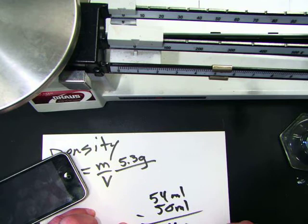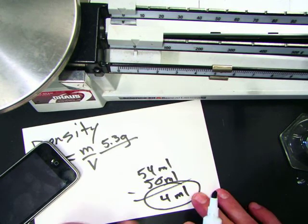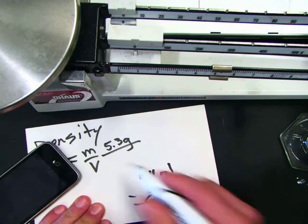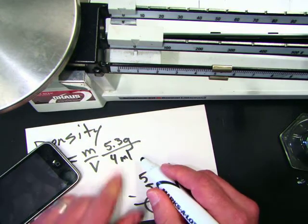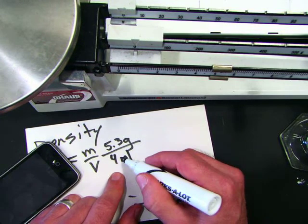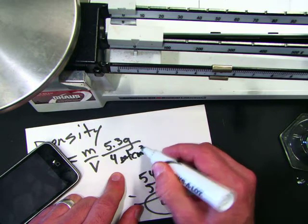So we come out that the difference of that is going to be 4 milliliters. So, that's going to be the volume of the rhino. So, we're going to put in here 4 milliliters, or if you remember, 4 milliliters is also equal to 4 cubic centimeters.